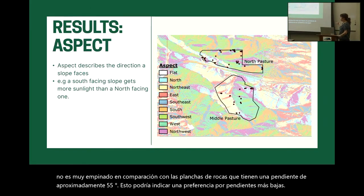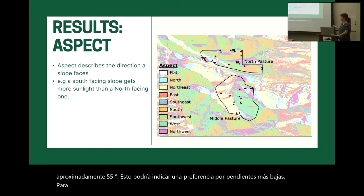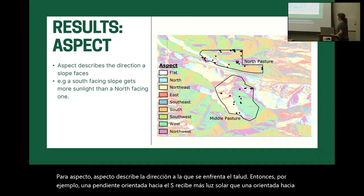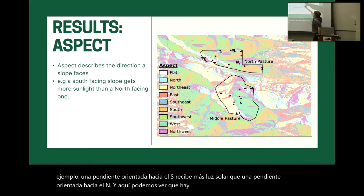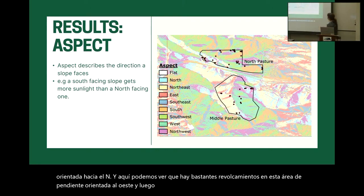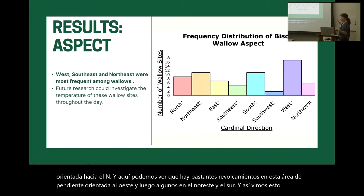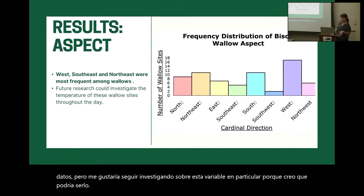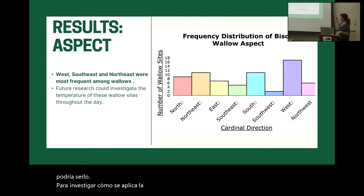For aspect, aspect describes the direction that the slope faces. For example, a south-facing slope gets more sunlight than a north-facing slope. We can see there are quite a few wallows in the western-facing slope area and a few in the northeast as well as south. I would like to continue doing research on this variable in particular, because I think it could be interesting to investigate how the temperature of these different aspects could affect the wallow sites throughout the day.